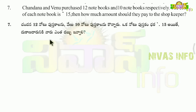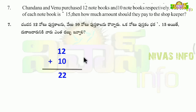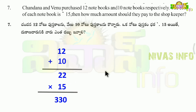Total notebooks: 12 plus 10 equals 22 notebooks. One notebook costs 15 rupees, so 15 × 22 = 330 rupees total. That is the amount both should pay to the shopkeeper. Alternatively, we could calculate separately: 12 × 15 plus 10 × 15, but combined gives the same 330 rupees.